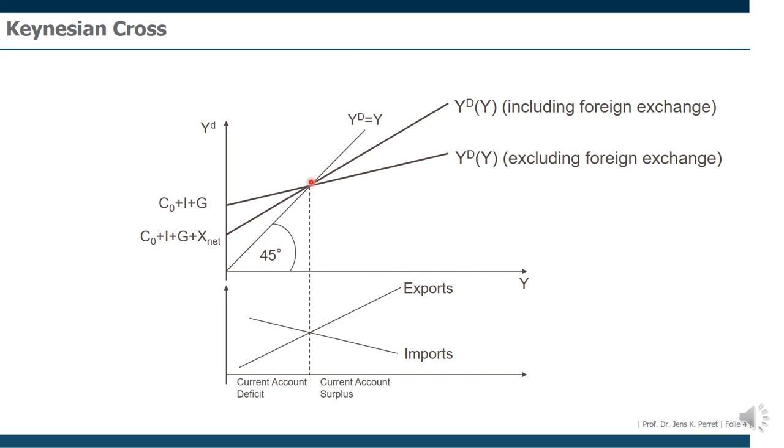However, considering the equilibrium situation, nothing will change. However, if we move away from the equilibrium situation, then this might have significant impact. Meaning, if we have a shift upwards or downwards because something changes in domestic demand, then this will actually have a significant impact whether we have an open or a closed economy.